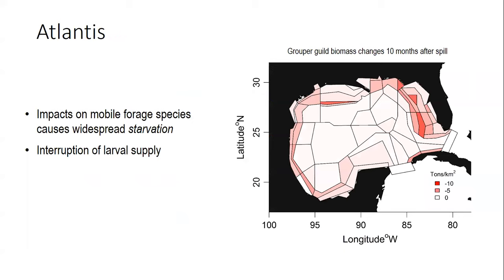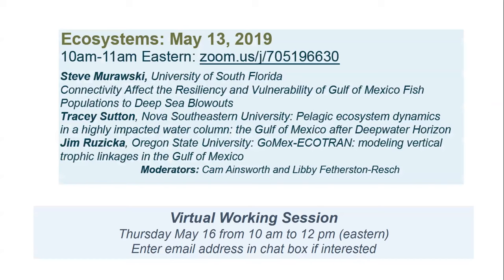This slide shows a visual example of connectivity from the Atlantis ecosystem model from the Sea Image project. Atlantis is a spatial model and you'll see the loss of biomass in the Grouper Guild 10 months after the Deepwater Horizon oil spill. Part of this can be attributed to direct toxicological impacts, but Atlantis suggests that collateral damage from starvation and reduced larval supply were equally as harmful to the Grouper Guild and acted over a much larger region than just the oil footprint. Following this webinar, there will be a virtual working session scheduled for Thursday, May 16th from 10 a.m. to 12 noon Eastern time, where invited guests will discuss the conceptual model framework. If you're interested in listening in, please type your email address into the chat box.